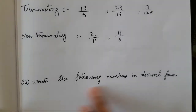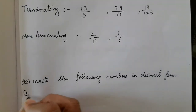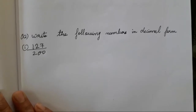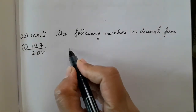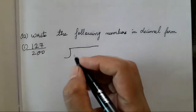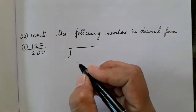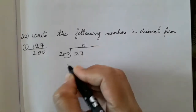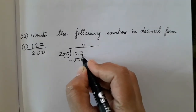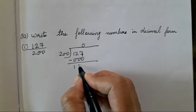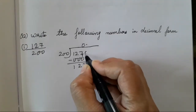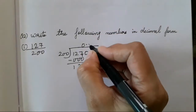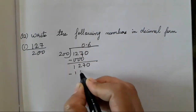The next question asks us to write the following numbers in decimal form. We have to write their decimal forms by the division method. So for 127/200: 200 is the divisor and 127 is the dividend. 127 is smaller, so we take 0 and carry forward, adding a decimal point. Take 0 — now it is 1270. 206 are 1200.